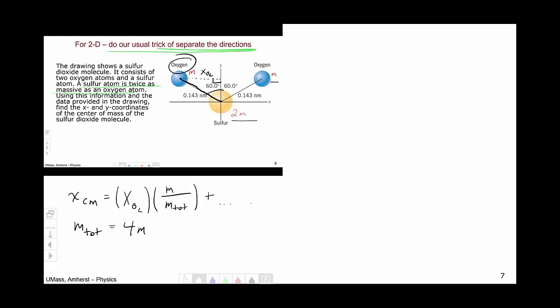For this we can use trigonometry. So this distance is our x_OL as I've been calling it. So if we look at our triangle, the sine of 60 degrees is going to be this x_OL divided by 0.143 nanometers.